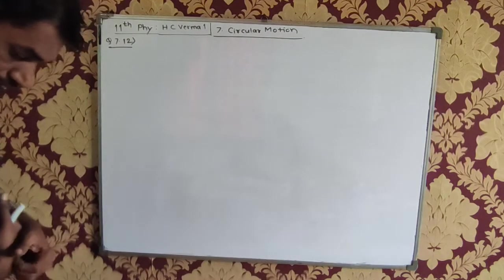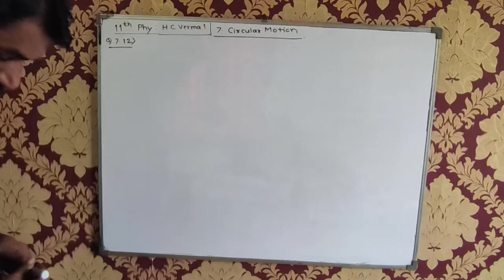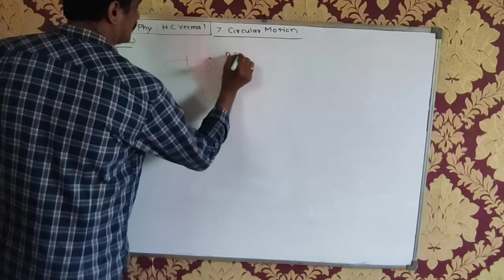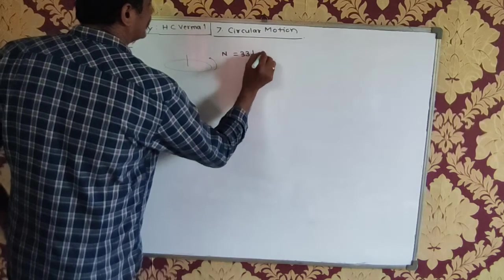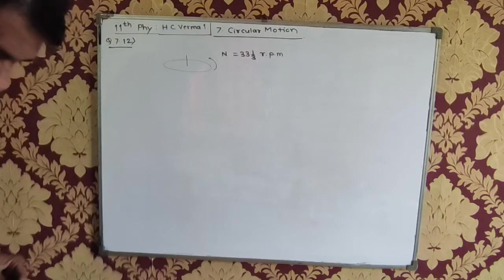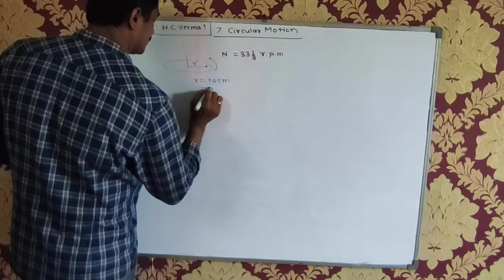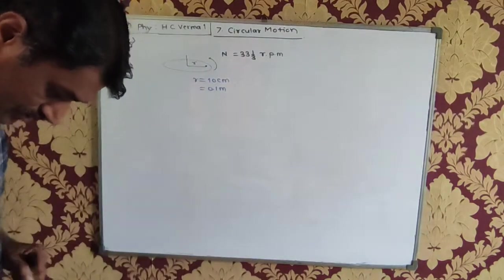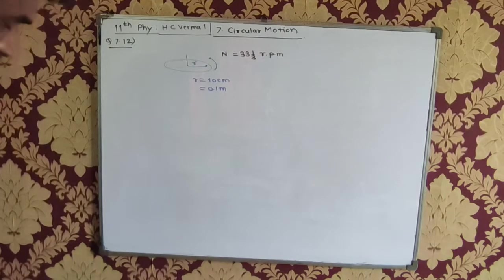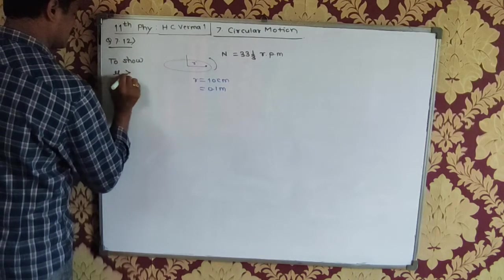A mosquito is sitting on an LP record disc rotating on a turntable at 33 and one-third revolutions per minute. The distance of the mosquito from the center of the turntable is 10 centimeters, that is 0.1 meters. We need to show that the friction coefficient between the record and the mosquito is greater than π² upon 81.